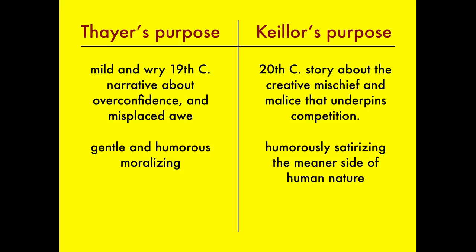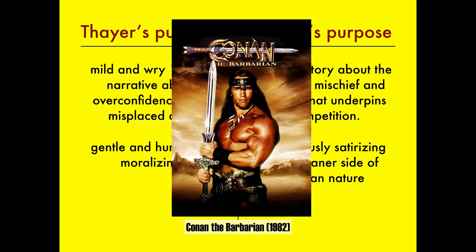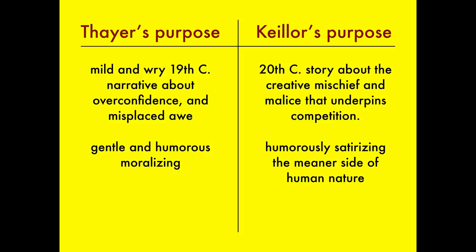Lastly, the two poems have very different purposes. Thayer's poem is a gentle and wry 19th-century narrative about how overconfidence and misplaced awe are foolish and likely to lead you to a bad end. If you really think about it, Keillor's doesn't really focus on Casey at all — his 20th-century poem focuses on the fans. His poem celebrates the creative mischief and malice that underpins competition: the sheer joy of crushing your opponent, driving them before you and hearing the lamentation of their loved ones, as Conan the Barbarian might say. It may be unsportsmanlike, but it's a very human impulse. This is one theme you could take away from Keillor's nasty little poem, and that's very different from the gentle and humorous moralizing that Thayer gives us.